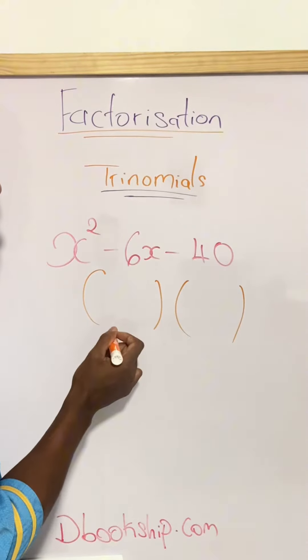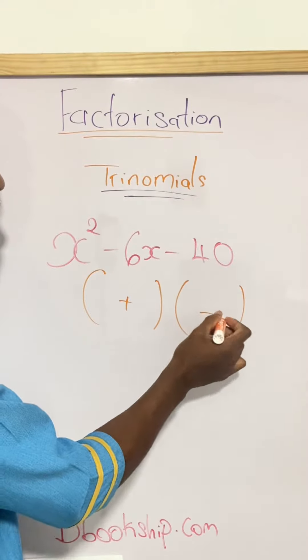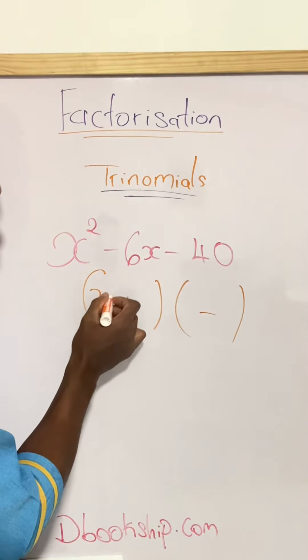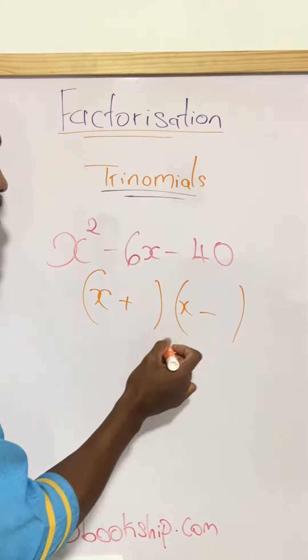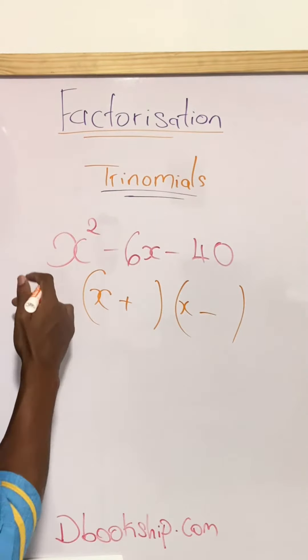In having double brackets, we're going to have one being positive and one being negative. We're going to have x on both sides since x times x gives me x squared.